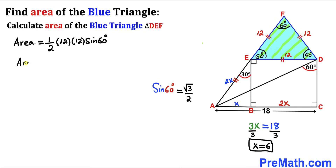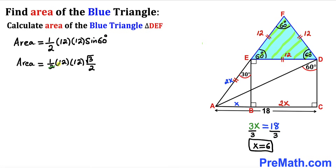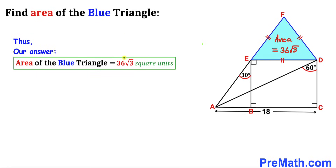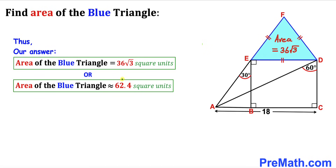So the area of this blue triangle equals one-half times 12 times 12 times square root of 3 divided by 2. The 2 in the denominator reduces 12 to 6, and likewise the other 2 reduces 12 to 6 as well. Therefore the area of this blue shaded triangle turns out to be 6 times 6 times square root of 3, which equals 36 times square root of 3 square units, approximately equal to 62.4 square units. That is our final answer.